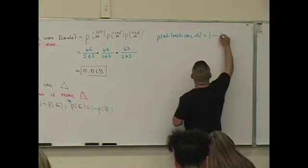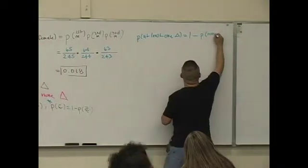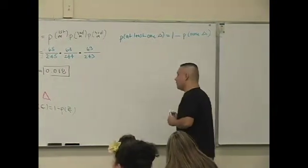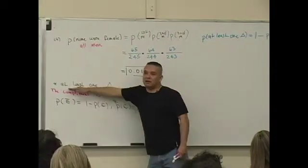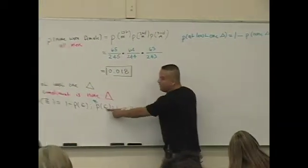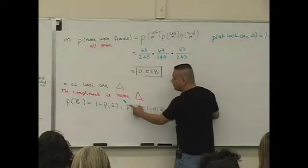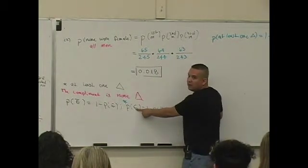So here's what I'm saying. The event at least one is here in my E. The at least one of anything, that's my event. You guys with me so far? You guys okay with that? But what's the complement of E?